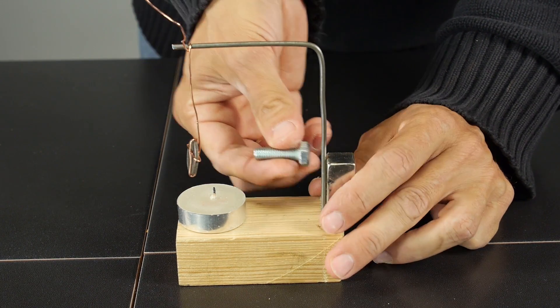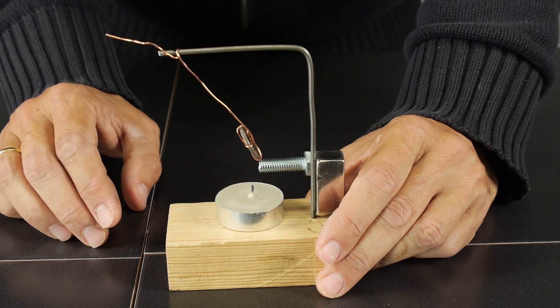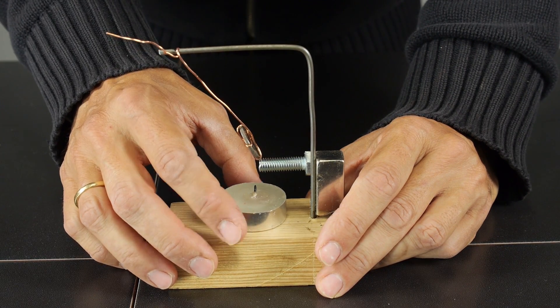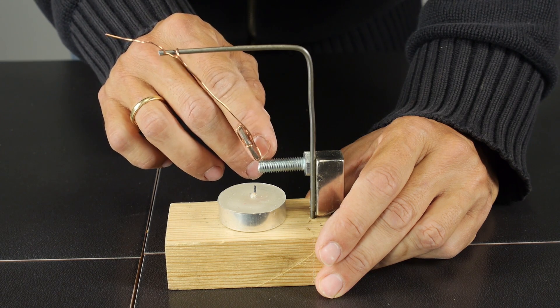To protect the magnet from the heat I'll put a screw. We put the candle under the coin and thus the heat will affect the screw and not directly the magnet.